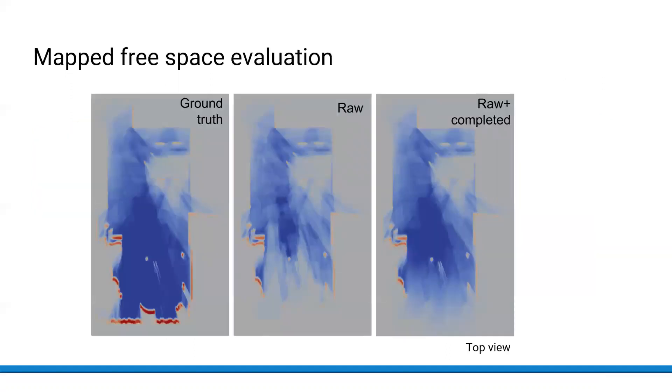This is further confirmed by studying the 2D cross-sections of free space in the scene. The free space map using probabilistic depth completion on the right is qualitatively much more similar to the map obtained from the dataset depth ground truth, shown on the left.